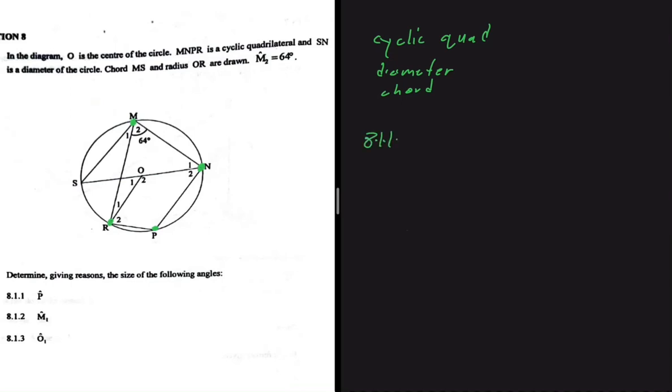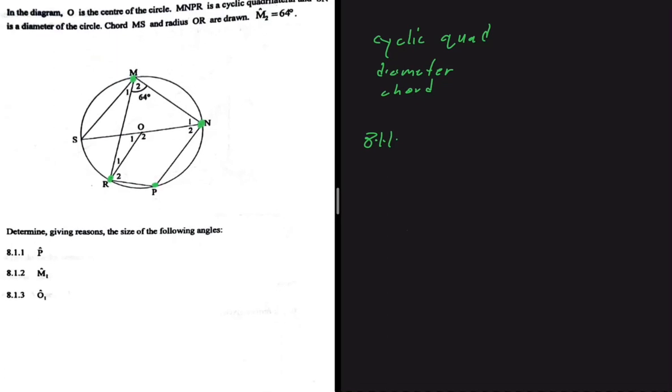8.1.1 says to determine, given reasons, the size of the following angles. And then we're starting with P. P is this angle here. But because we know that MNPR is a cyclic quad, then P plus M2 should be equals to 180 degrees.